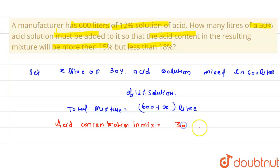30% of x mixed with 12% of 600 liters. We have total amount is 30/100 × x plus 12/100 × 600. These cancel to each other. Now we